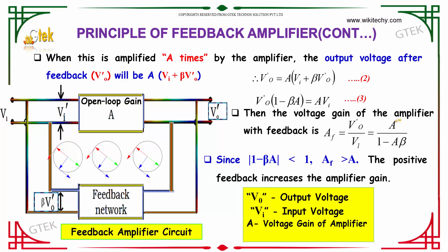The voltage gain of the amplifier with feedback is AF = V0'/Vi = A/(1 - βA). Since |1 - βA| < 1, AF is greater than A. Therefore, positive feedback increases the amplifier gain.